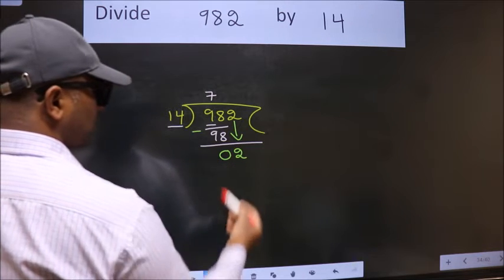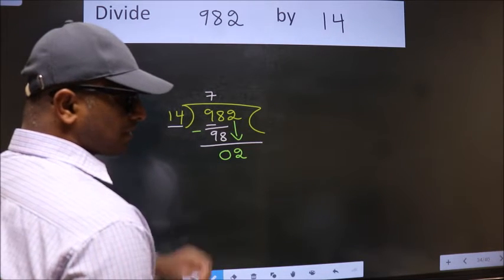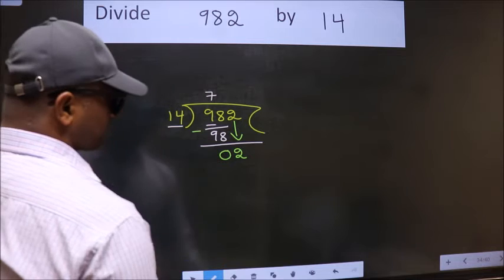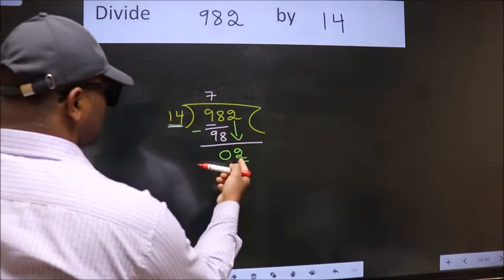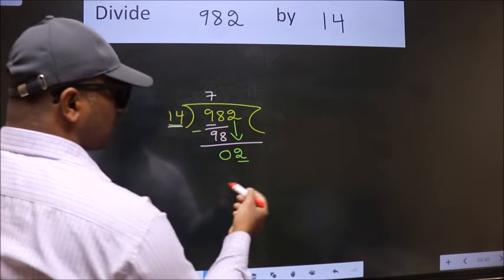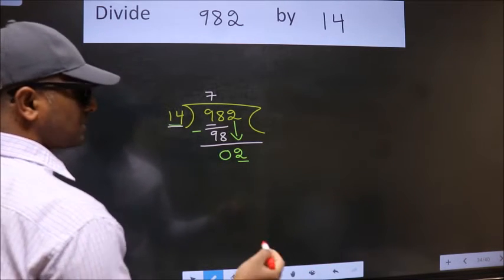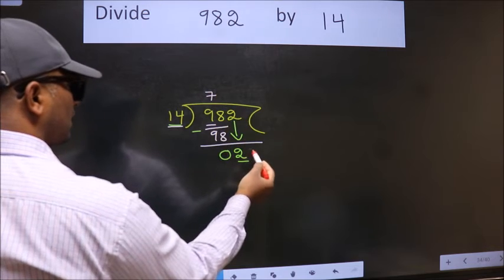After this step, the mistake happens. And the mistake is this. Here we have 2. Here 14. 2 is smaller than 14. So what many do is,